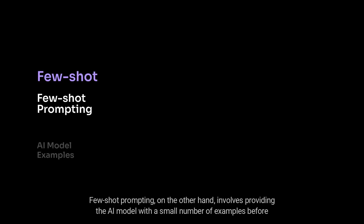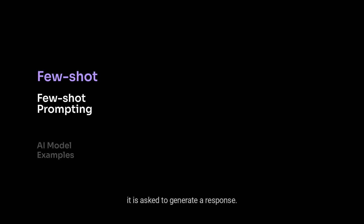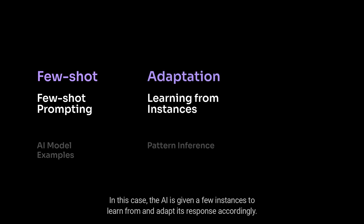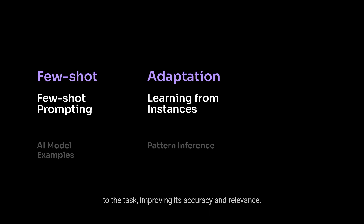Few-shot Prompting, on the other hand, involves providing the AI model with a small number of examples before it is asked to generate a response. In this case, the AI is given a few instances to learn from and adapt its response accordingly. Few-shot Prompting allows the model to use these examples to infer patterns or structures relevant to the task, improving its accuracy and relevance.